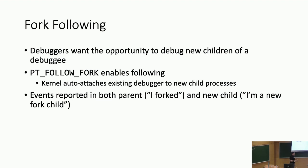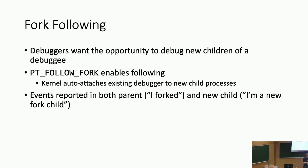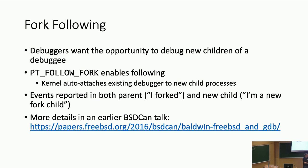That always happens, and the debugger is responsible for deciding what it wants to do. In addition, we also raise a fake SIGTRAP event in the parent, so the debugger actually gets two events for a fork: an event in the parent saying it forked and created a child, and an event in the child saying it's a new child. GDB is careful that whichever order it gets them in, it waits for the other one to happen and doesn't tell the upper layers that a fork happened until both events are received and it has control of both child and parent.